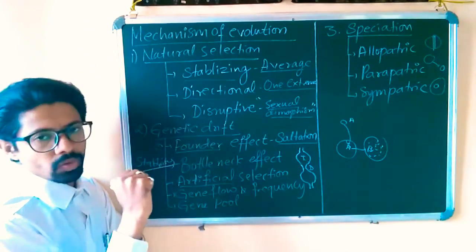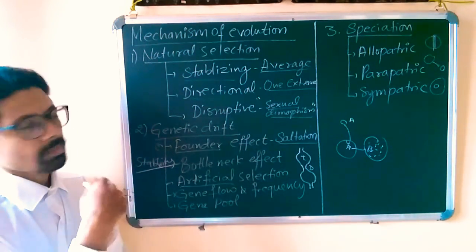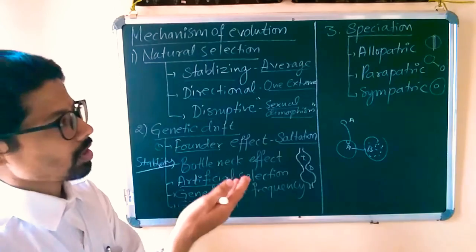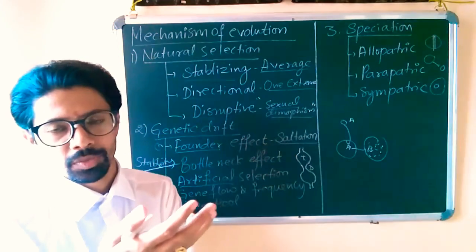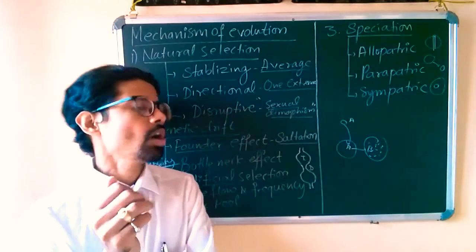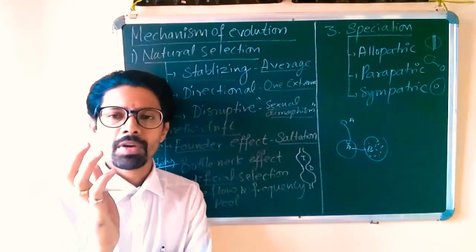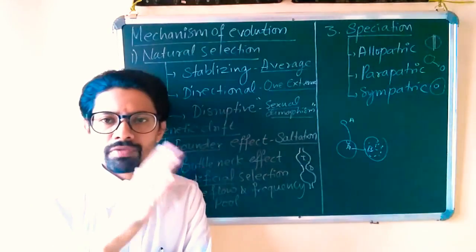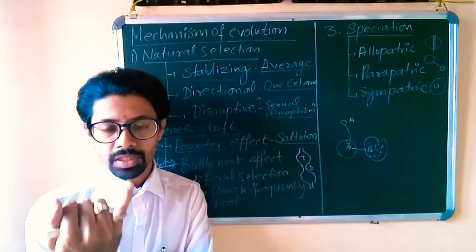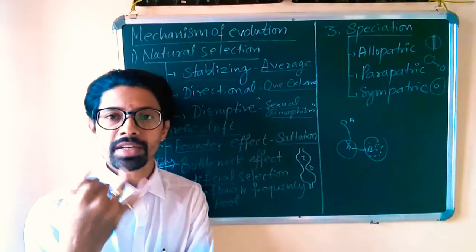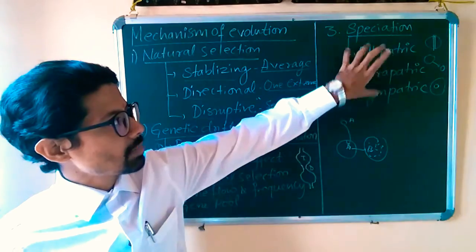The second major topic is speciation, also called cladogenesis. Speciation is the origin of new species from a previous species due to certain barriers — physical barriers, geographical barriers, or biological barriers.